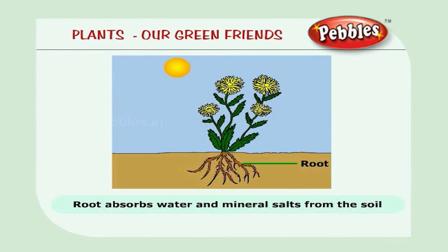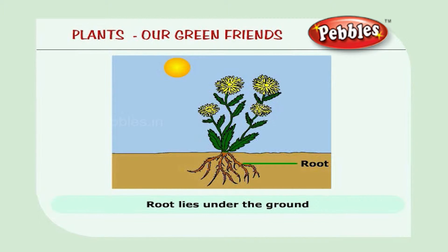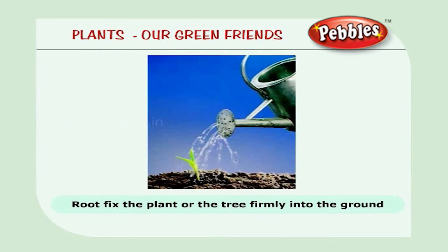Root absorbs water and mineral salts from the soil. Root is a very important part of a plant. Root lies under the ground. Root fixes the plant or the tree firmly into the ground. They bind the soil and hold the plant in place.